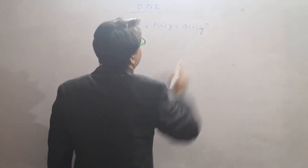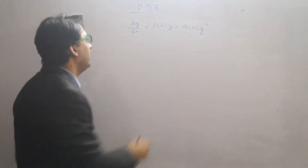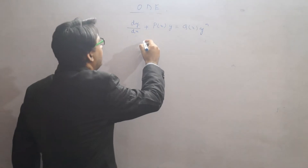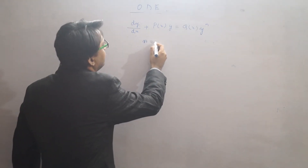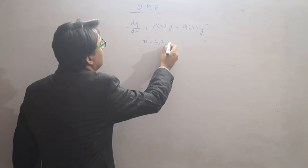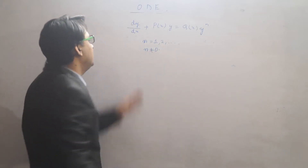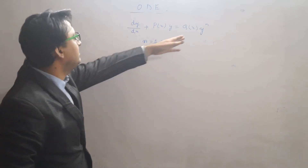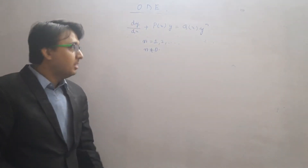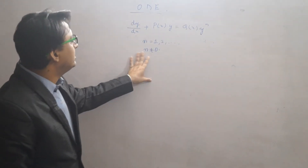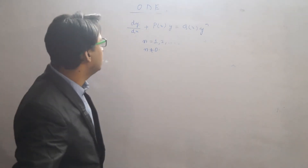There is some function of y^n introduced where n is 1, 2, or whatever, but n is not equal to 0. Had it been 0, it would make it a linear differential equation. In the Bernoulli equation, what we do is try to reduce it to a linear differential equation. We'll just see how.